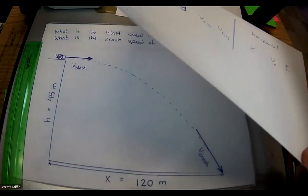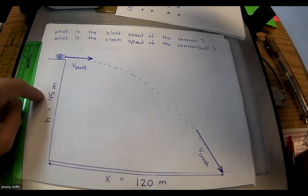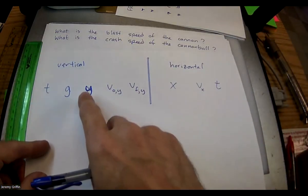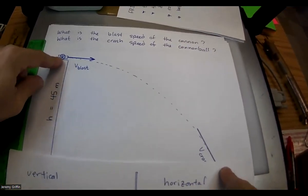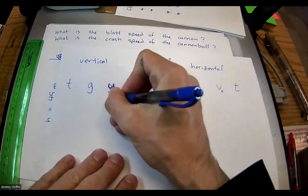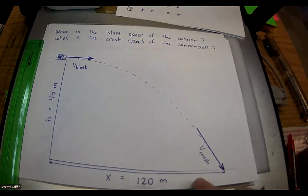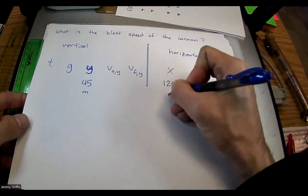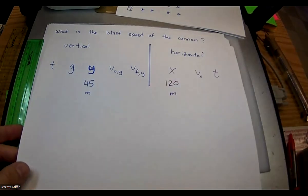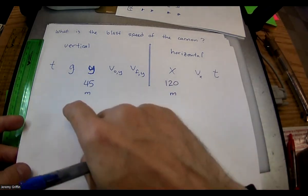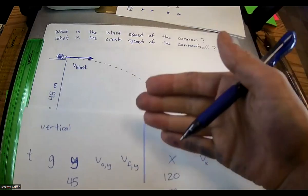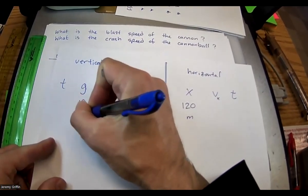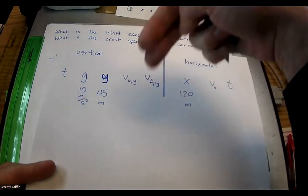Let's put down on paper what we have. I did explicitly give you two numbers. How about 45 meters? Which variable does that represent? Going from point A to point B, there's a height change of 45 meters — so 45 meters goes in for y. How about the 120 meters? That goes in for x — horizontal displacement. What other numbers do you know? You're on Earth, so gravity is implied: 10 meters per second squared. So you're accelerating down at 10 meters per second squared.